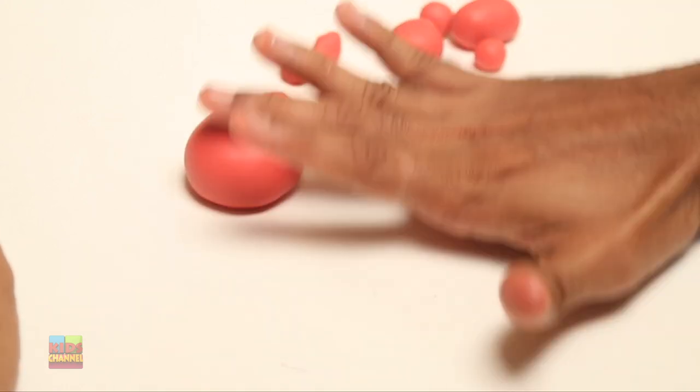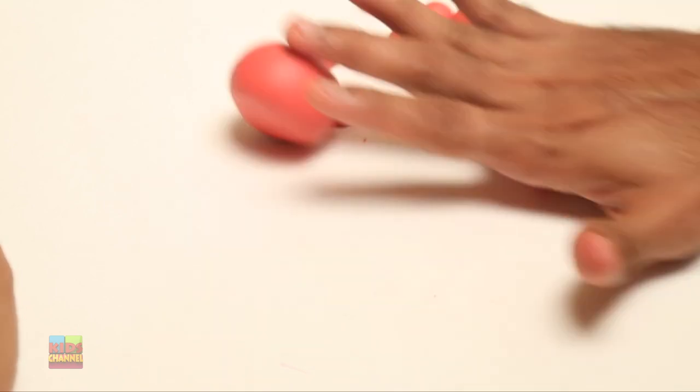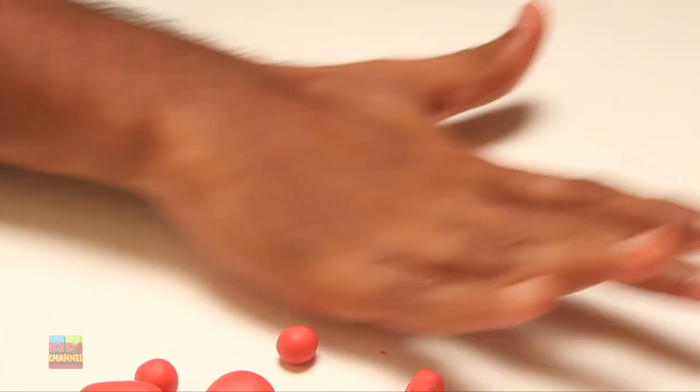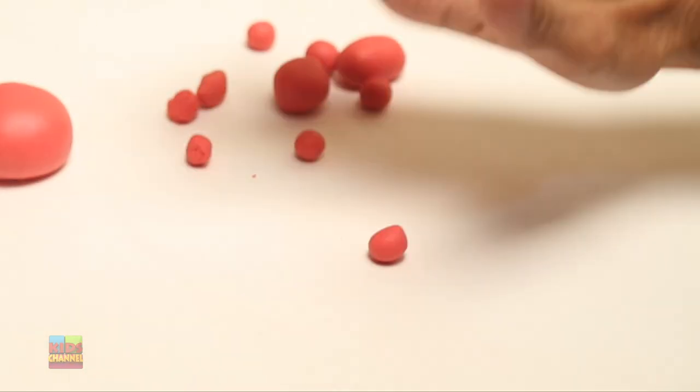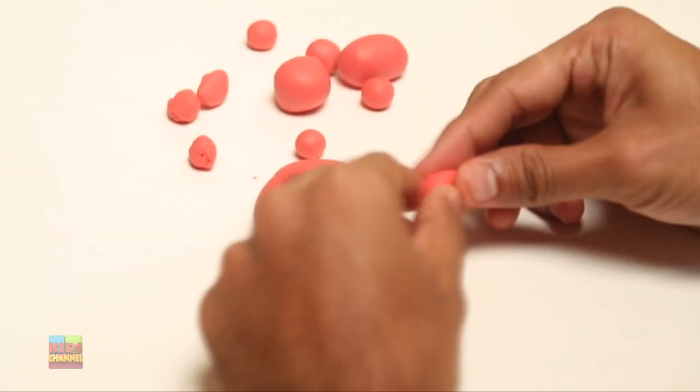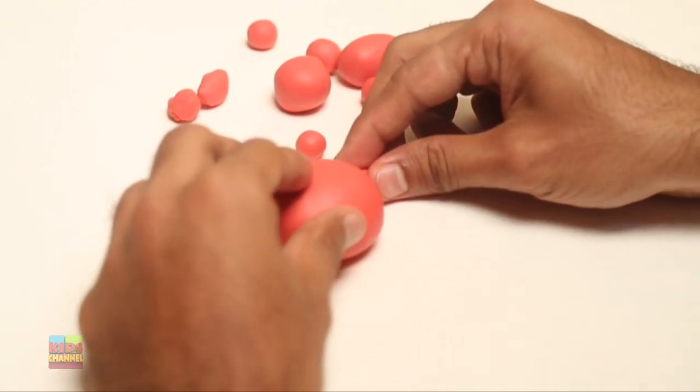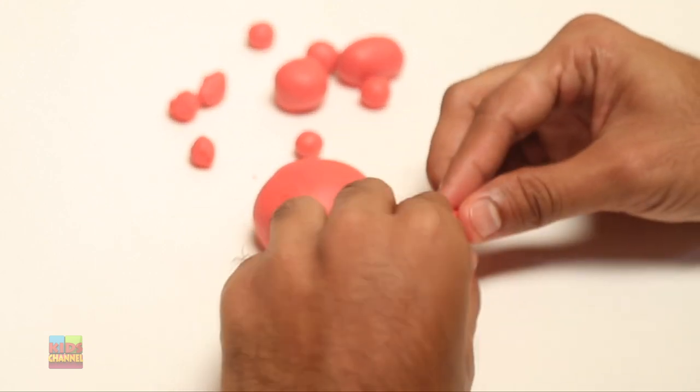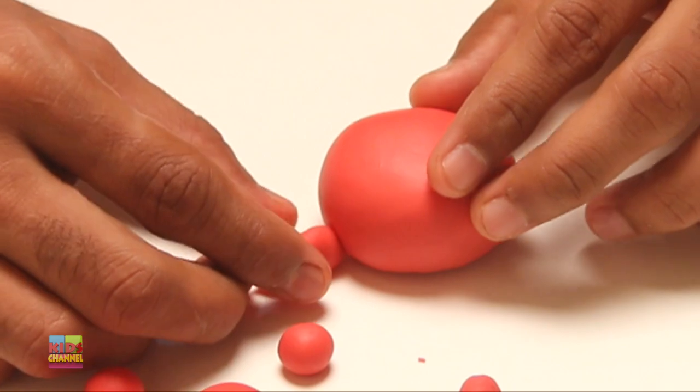And those other four pieces, we're going to roll like a ball but a little bit longer. See what we're doing there? It's not a ball shape but more like a tube. And now press it. And these are going to be the legs on the crab, just the beginning of the legs.